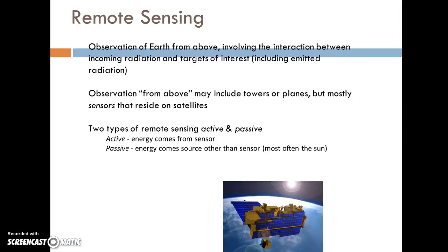When we talk about remote sensing, we're talking about the observation of Earth from above — in a mapping sense. Remote sensing is also used in other fields including medicine, but for our purposes it means observing Earth from above. Historically this has been done from airplanes, but now is commonly done from satellites, although airplanes, towers, and other methods are also used. There are two essential types: active and passive, and we'll see some examples of these in the coming slides.